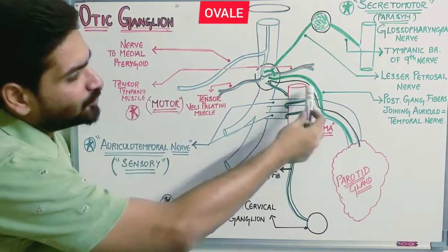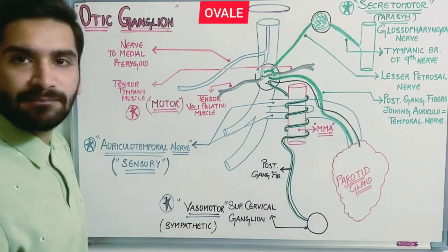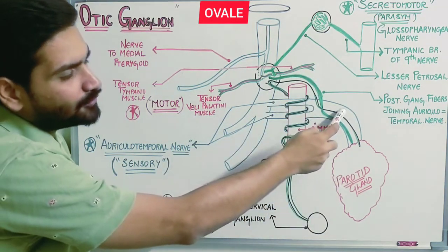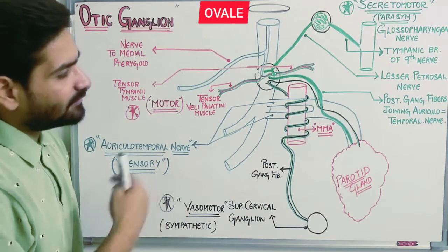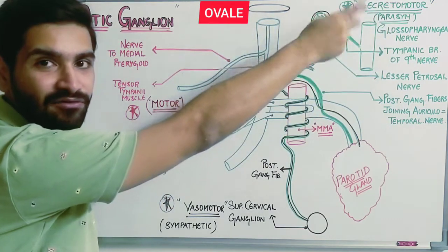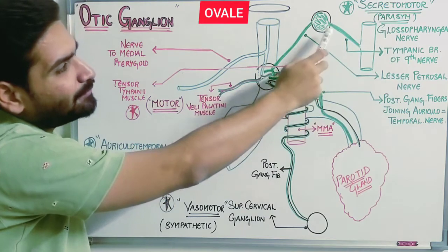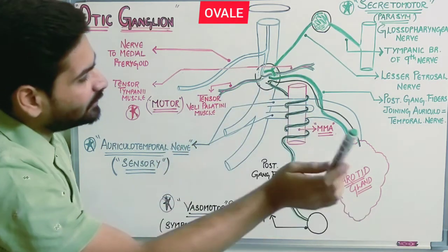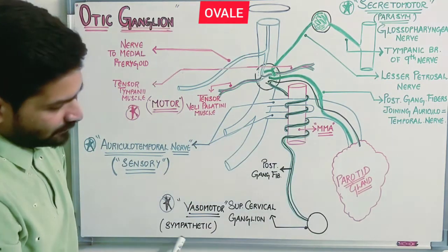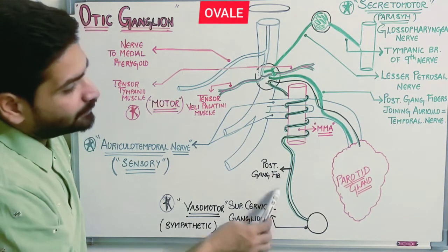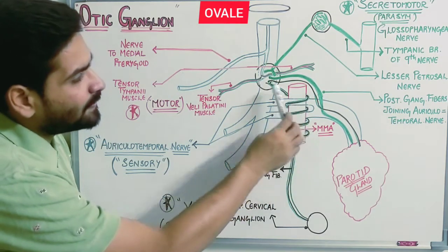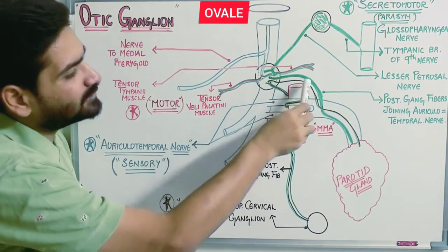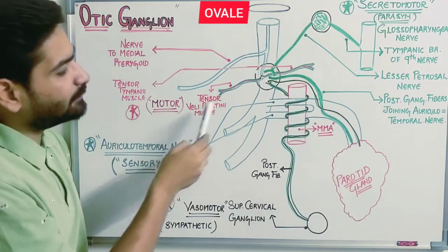All post-ganglionic fibers after relaying in the otic ganglion pass to the parotid gland via the auriculotemporal nerve. The auriculotemporal nerve is a cutaneous branch of the mandibular nerve, and it serves as the mediator between the otic ganglion and the parotid gland — carrying secretomotor, vasomotor, and motor supplies. To revise: secretomotor goes from inferior salivatory nucleus → glossopharyngeal nerve → tympanic branch → tympanic plexus → lesser petrosal nerve → otic ganglion → auriculotemporal nerve → parotid gland.